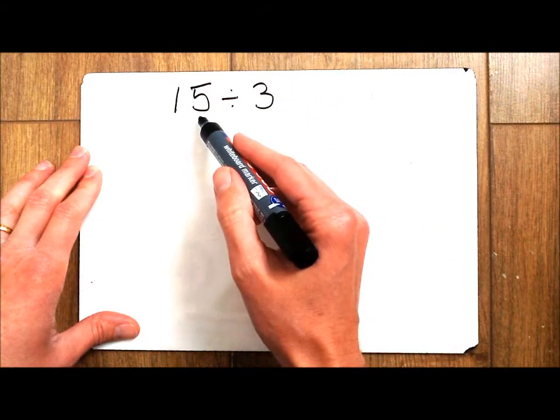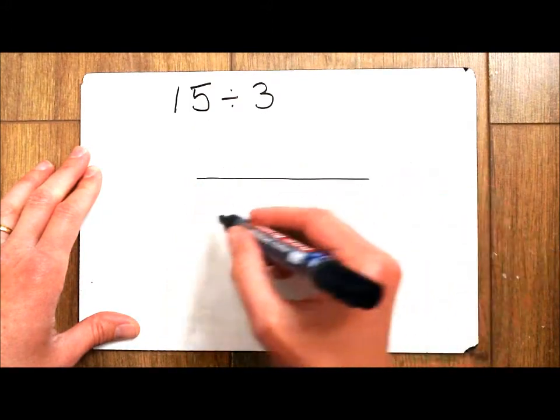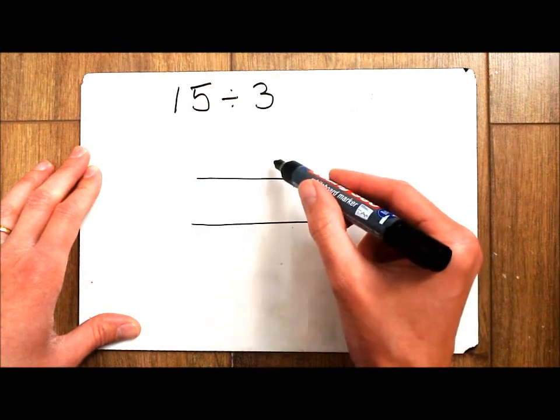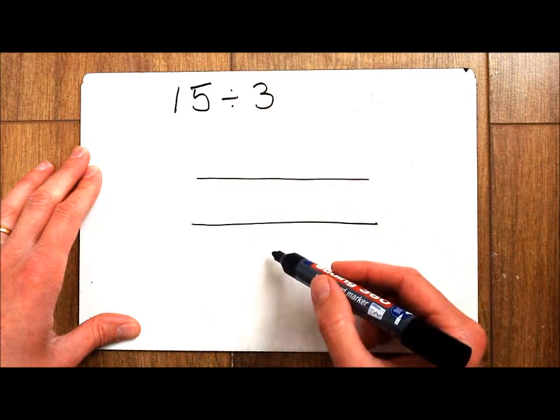I've got 15 things and I want to put them into 3 equal groups. So I've got one group here, one group here, and one group here.